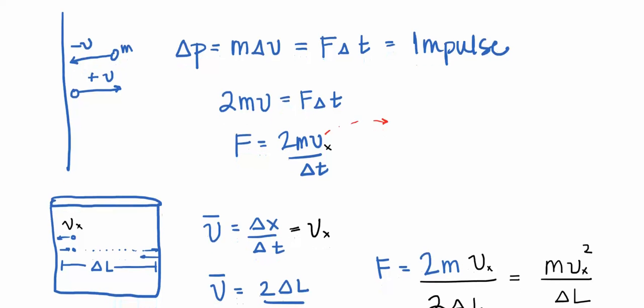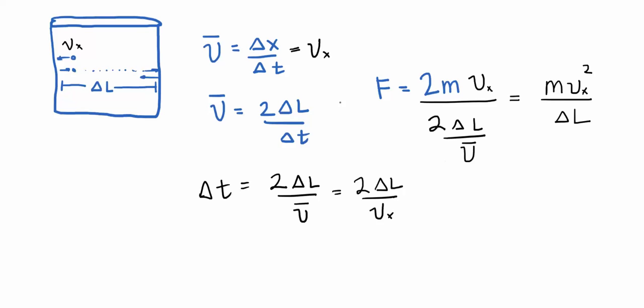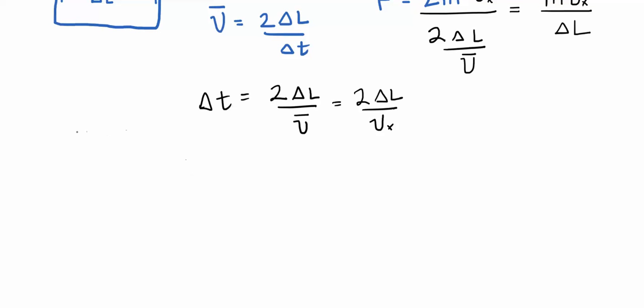If we look at a particle moving only horizontally, its average velocity is in the x-direction. Average velocity is distance divided by time, and the total distance from one collision back to where it started is 2·ΔL. Solving for Δt and substituting into the force equation gives us m·vx² / ΔL for the force one x-direction particle applies to the wall.